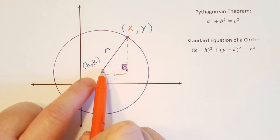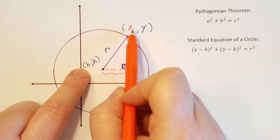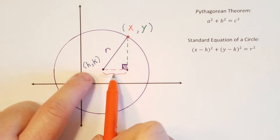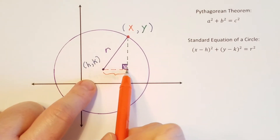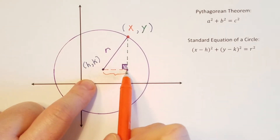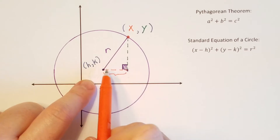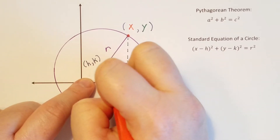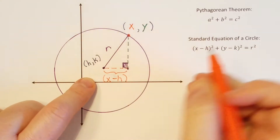But the x coordinate here is h, and the x coordinate of the outer point is x. So we're going to find the change in the horizontal distance — that's going to be x minus h.